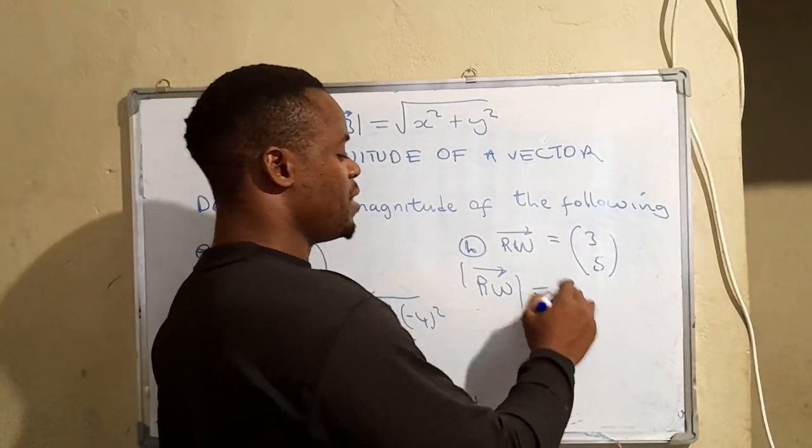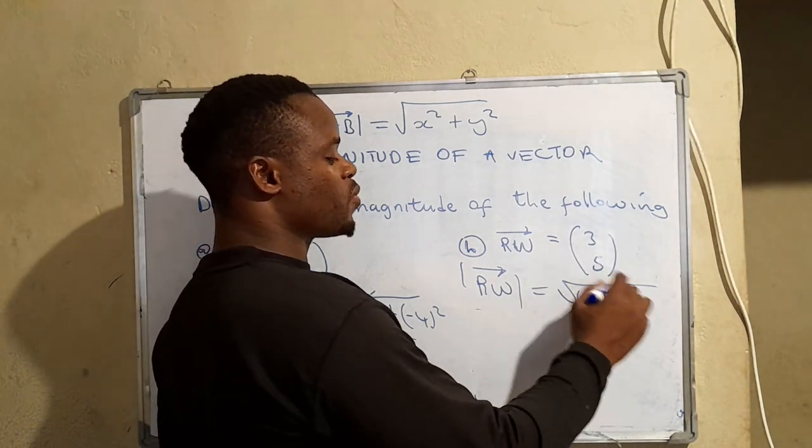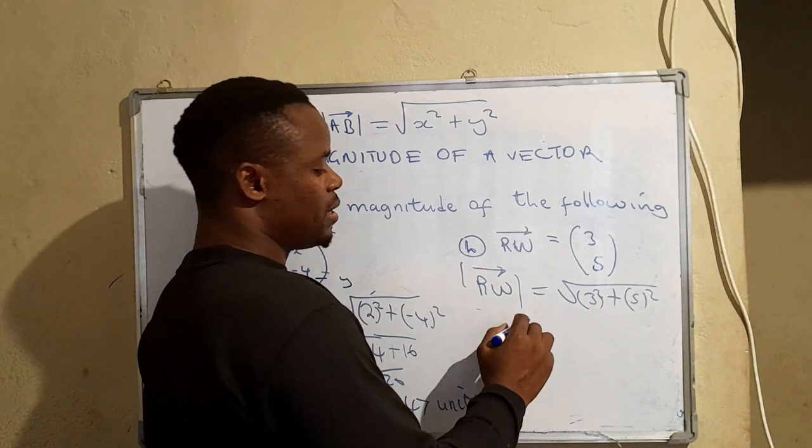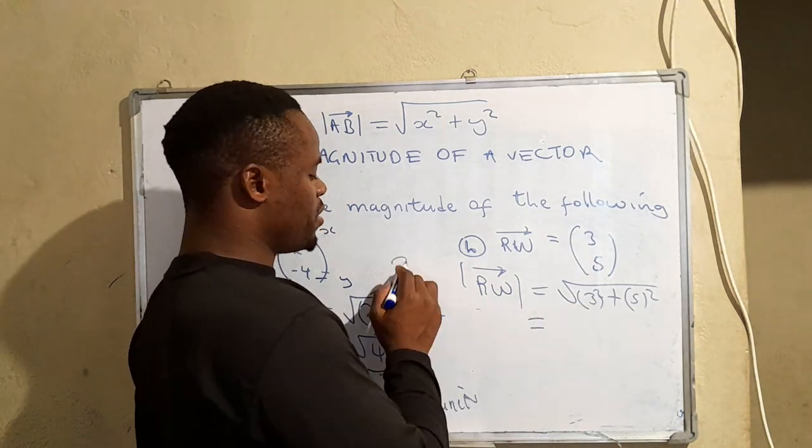It is equal to the square root of the square of the x component plus the square of the y component. So that one will give us that when we actually expand this, that will be 3 times 3.